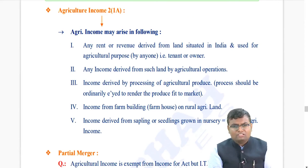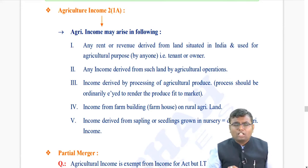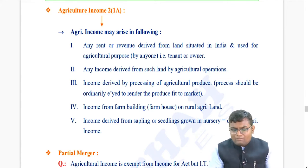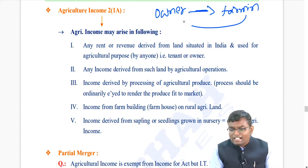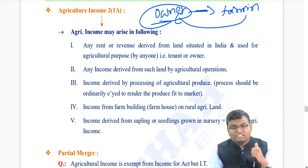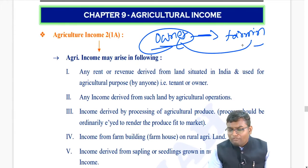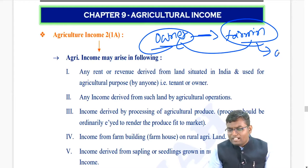First, a basic definition under section 2, clause 1A. Essentially, everything related to agricultural produce will become agricultural income. For example, if I am an owner of land and I give this land on rent to you to do farming activity, then whatever rent you pay to me is agricultural income. Also, if after farming you give the produce for storage in a warehouse near rural agricultural land, the storage charges will also be agricultural income.